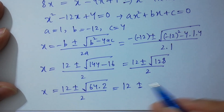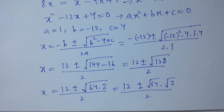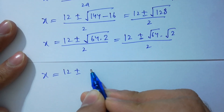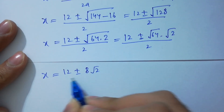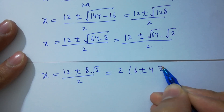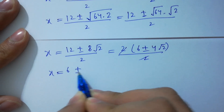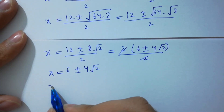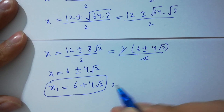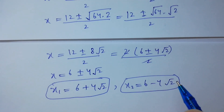Simplify: square root of 128 equals square root of 64 times 2, which is 8 square root of 2. So x equals 12 plus or minus 8 square root of 2, over 2. Factor out 2: 2 and 2 cancel, giving x equals 6 plus or minus 4 square root of 2. Therefore x₁ equals 6 plus 4 square root of 2, and x₂ equals 6 minus 4 square root of 2.